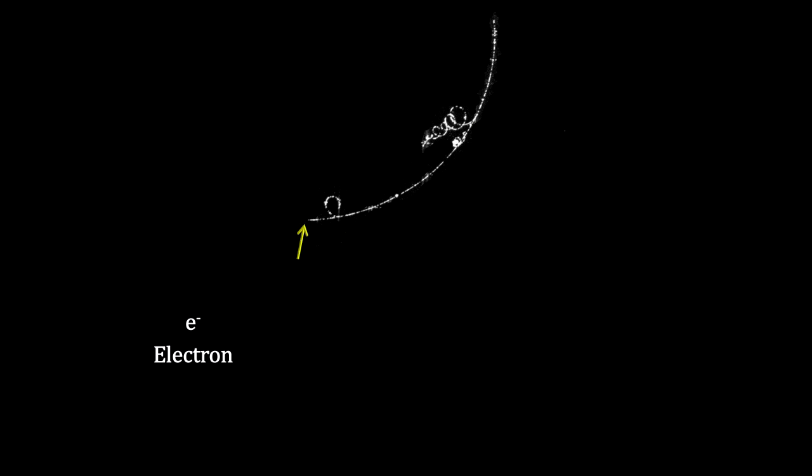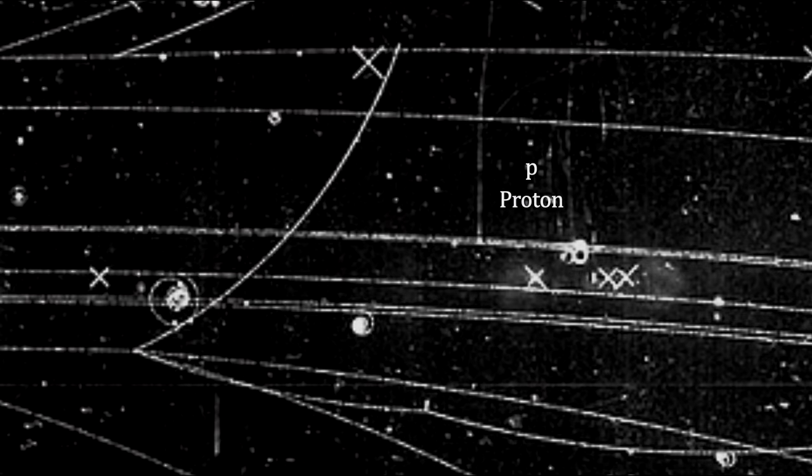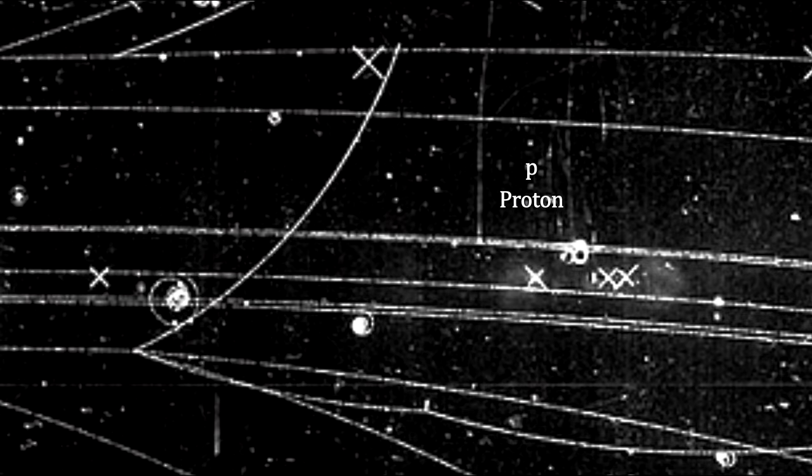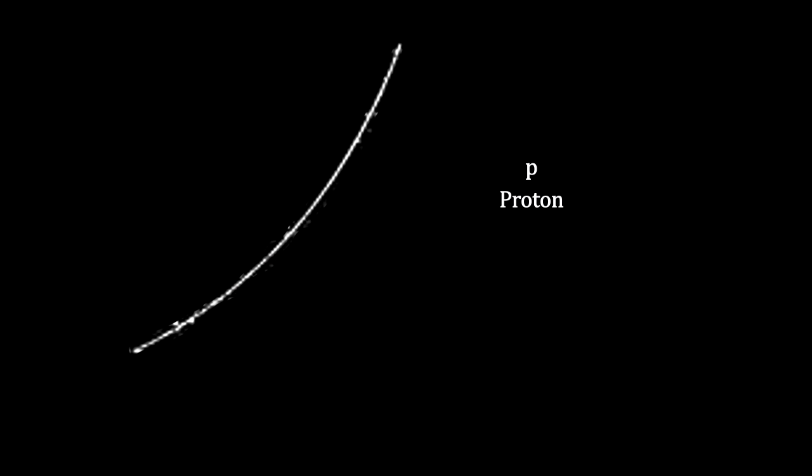The track ends when the electron is captured by a proton to form an electrically neutral hydrogen atom. In this bubble chamber photograph from CERN, we see a particle's track rotating counter-clockwise, indicating that it is positively charged. The particle's line is also thicker than the others, indicating that it is a large, slow-moving particle. This is a characteristic of proton tracks.